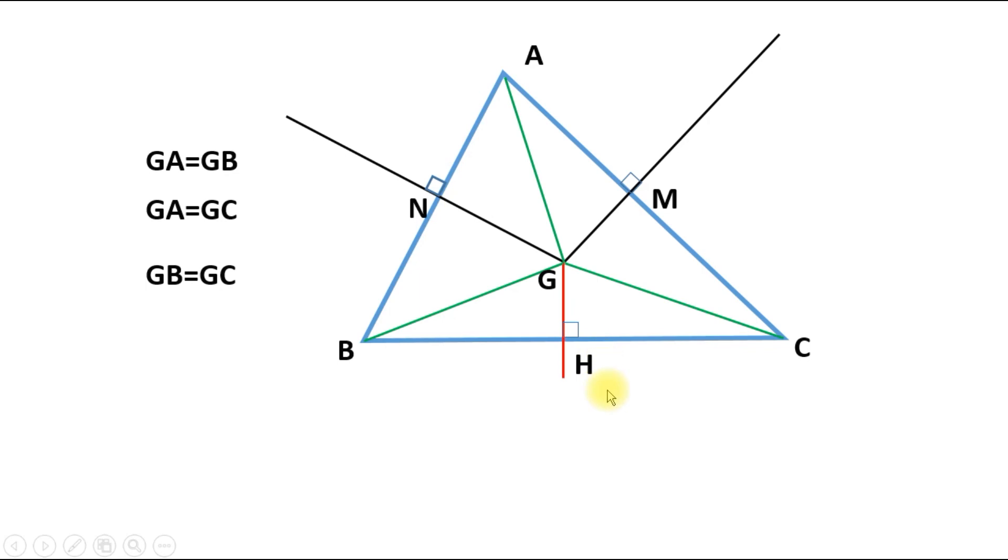Hence, GH is a perpendicular bisector of BC. And so all perpendicular bisectors meet at one point.